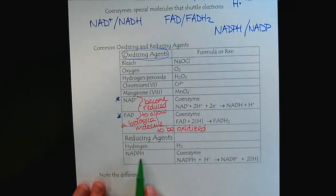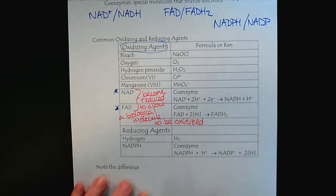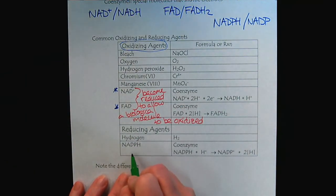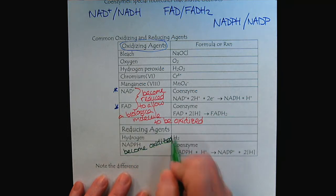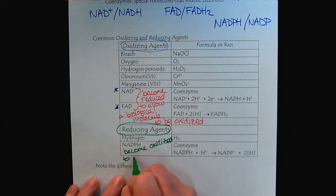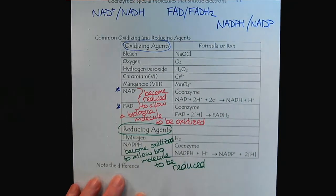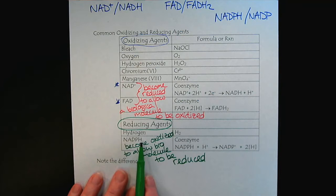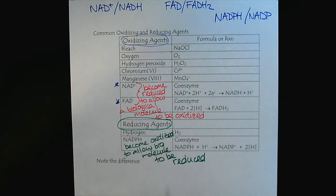NADPH we describe as a reducing agent, complementary to the other coenzymes. It will become oxidized to allow a biological molecule to be reduced — that's why it's called a reducing agent, because these reactions always must occur together. NADPH is a great reducing agent because it donates the hydrogen atom to cause the reduction of the biological molecule.